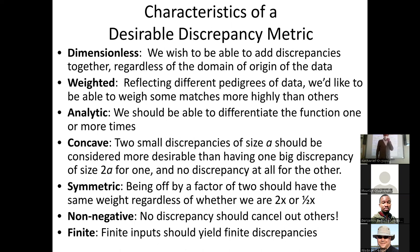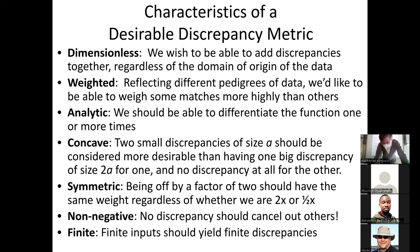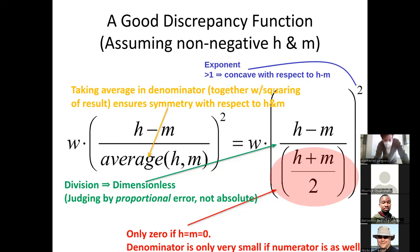Generally, it should be symmetric — if we're off by a factor of two, whether we're at half the value or two times the value, that should be penalized similarly. It should be non-negative — we shouldn't be able to cancel out how badly we're doing matching deaths because we're doing super well matching cases. And it shouldn't be infinite. So this is one way of doing point matching. But as I said, I'll come back and talk about this more next time. We were often interested in abstracting certain measures from the data — not just matching point by point the model value and the observed historic value, but instead being true to certain statistical measures.